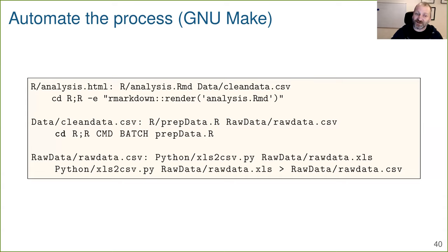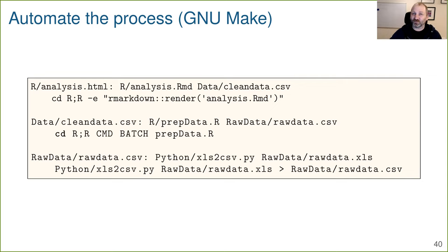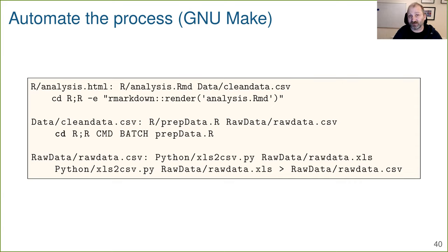The fourth main step I take in making my work more reproducible is to automate the process. The main tool I use is GNU Make, a command line tool. It's a very old tool — originally written for compiling large computer programs like old Fortran code. But basically Make can be used to automate any process you run at the command line.